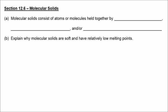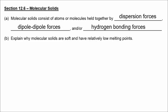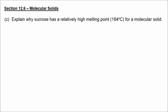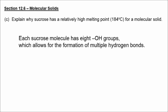Section 12.6, molecular solids. You know that they are held together by dispersion forces, dipole-dipole forces, or hydrogen bonding. They are soft and have low melting points because, unlike ionic solids, intermolecular attractive forces are relatively weak. Sucrose does have a rather high melting point for a molecular solid, but that's because there are lots of opportunities for hydrogen bonding to occur. Each sucrose molecule has eight OH groups, which allow for the formation of multiple hydrogen bonds.